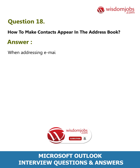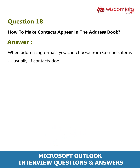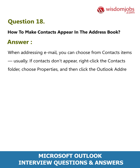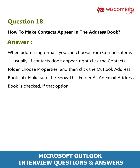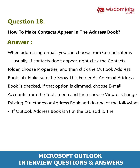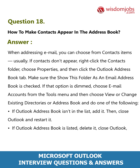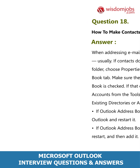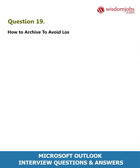Question 18: How to make contacts appear in the address book. Answer: When addressing email, you can choose from contacts items. If contacts don't appear, right-click the Contacts folder, choose Properties, and then click the Outlook Address Book tab. Make sure 'Show this folder as an email address book' is checked. If that option is dimmed, choose Email Accounts from the Tools menu, then choose 'View or Change Existing Directories or Address Book'. If Outlook Address Book isn't in the list, add it, then close and restart Outlook. If it is listed, delete it, close Outlook, restart, and then add it.